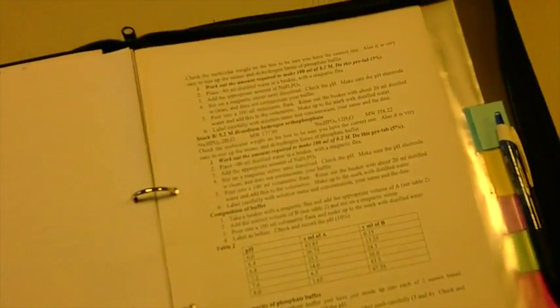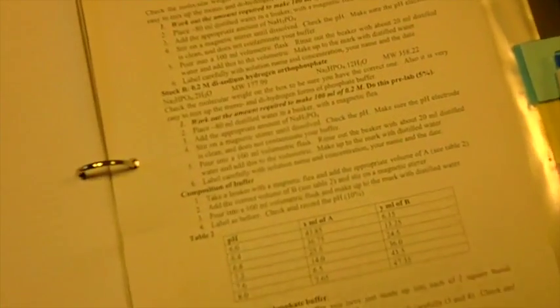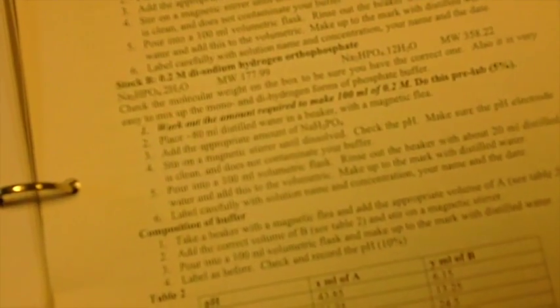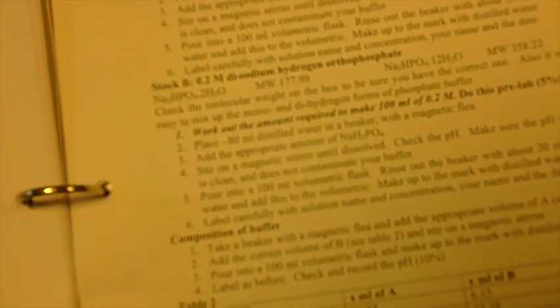As noted in your handbook, the second student must now make up stock B. You are required to work out the amount required to make 100 ml of this 0.2 molar solution which you need to do pre-lab and follow the exact same steps just shown.